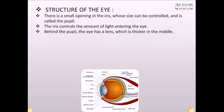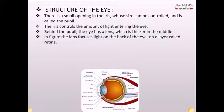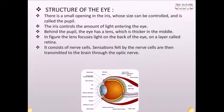Behind the pupil, the eye has a lens which is thicker in the middle. The lens focuses light on the back of the eye on a layer called retina. It consists of nerve cells. Sensations felt by the nerve cells are then transmitted to the brain through the optic nerve.